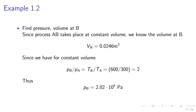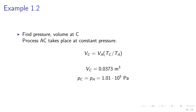So we may find the pressure and the volume at B. Since process AB takes place at constant volume, we know the volume at B. VB equals 0.0246 meters cubed. For constant volume, we obtain the ratio between PB and PA is 2. So PB equals 2 times 10 to the 5th Pascal.